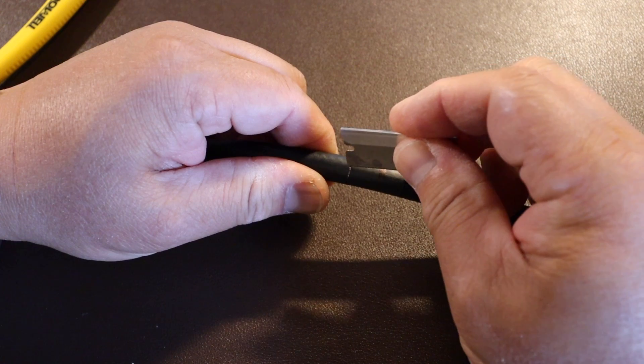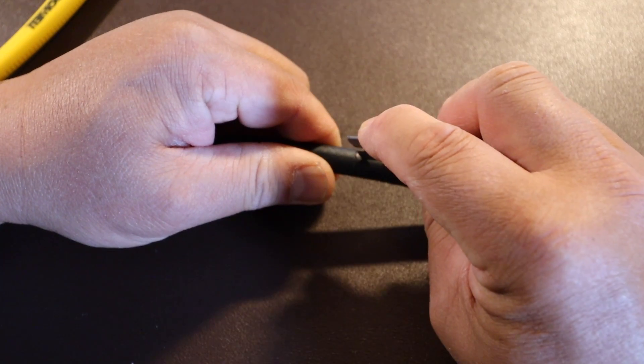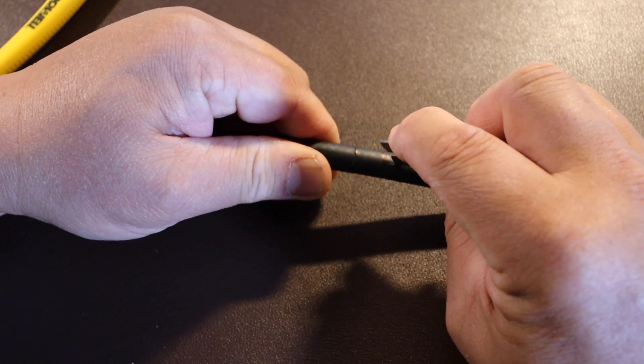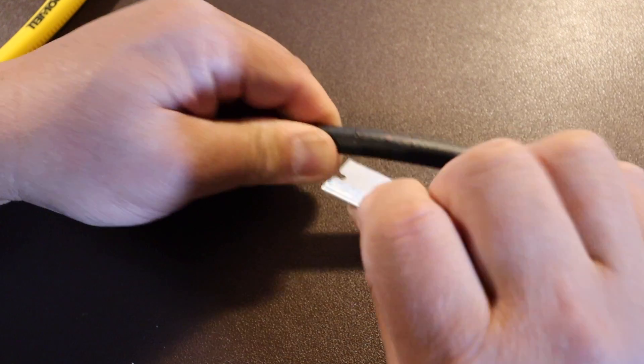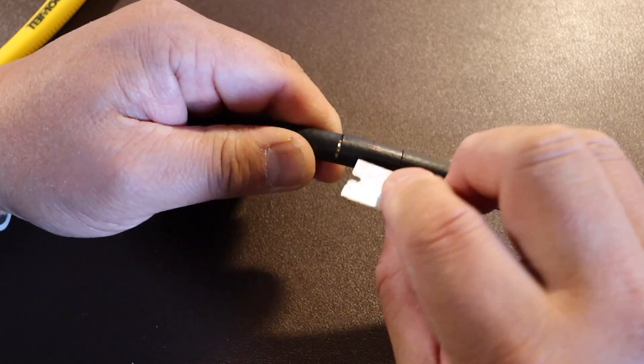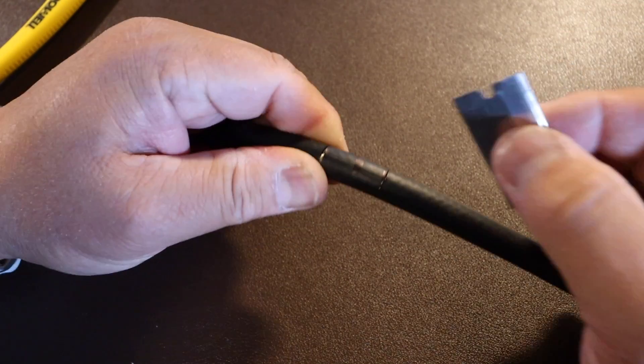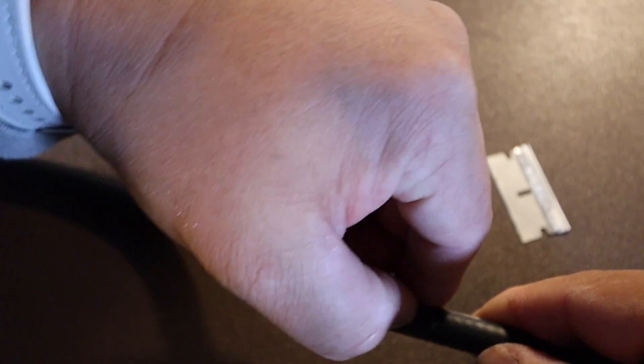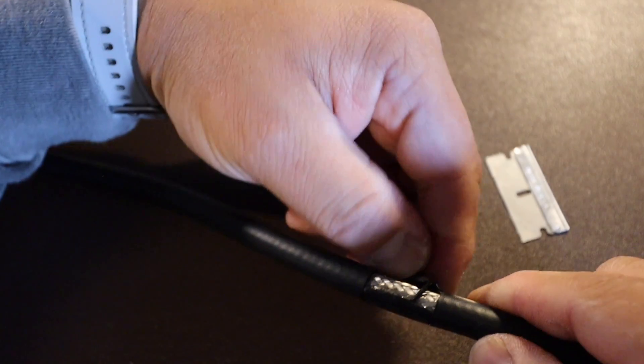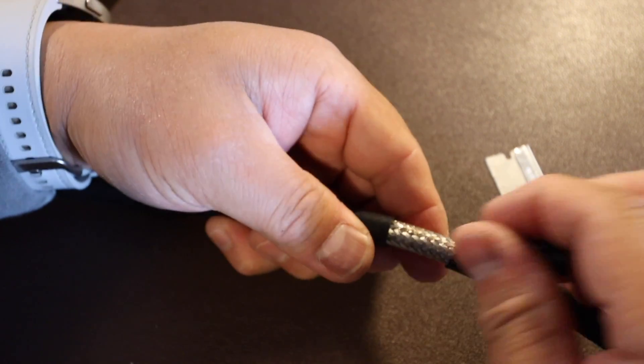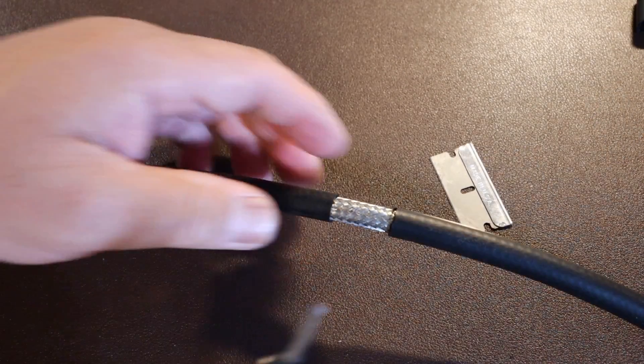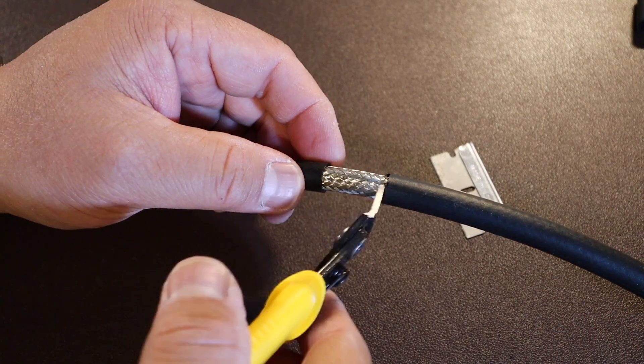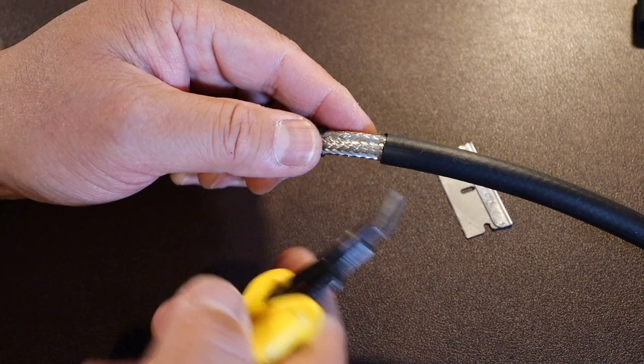Next I'm going to cut it through the middle. Just to only remove the black outer sheath. Next, we're going to cut the shielding area with some good side cutters.